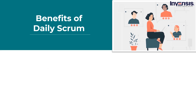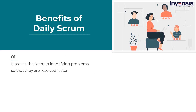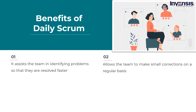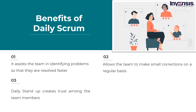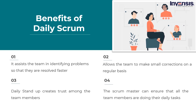Benefits of the Daily Scrum: it assists the team in identifying problems so that they are resolved faster. It allows the team to make small corrections on a regular basis so they stay on the right path and work towards a common sprint goal. Daily stand-up creates trust among team members, as they communicate every day and there is transparency within the team. With daily stand-up meetings, the Scrum master can ensure that all team members are doing their daily tasks.